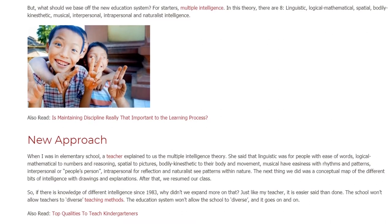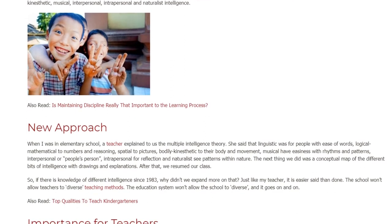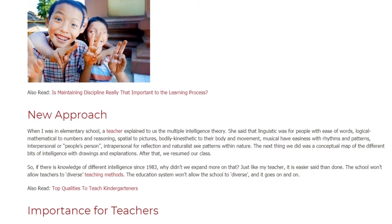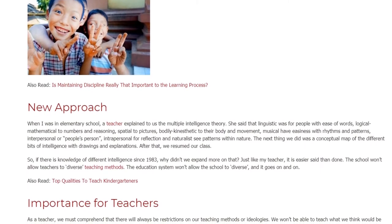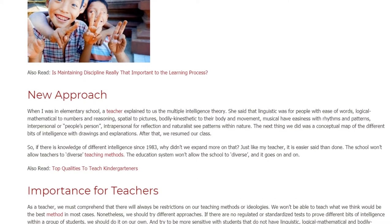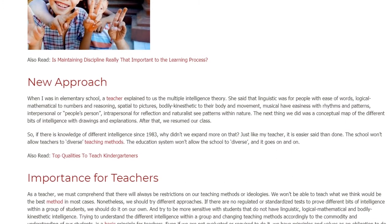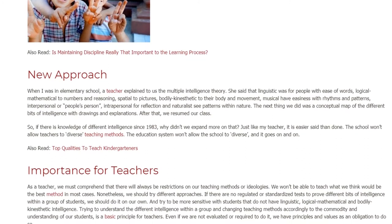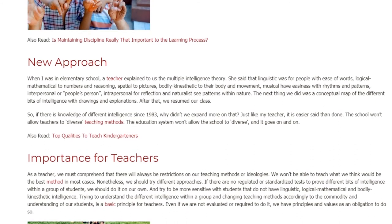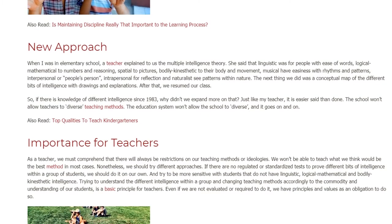When I was in elementary school, a teacher explained to us the Multiple Intelligence Theory. She said that Linguistic was for people with ease of words; Logical-Mathematical for numbers and reasoning; Spatial for pictures; Bodily-Kinesthetic for their body and movement; Musical for easiness with rhythms and patterns; Interpersonal for being a people person; Intrapersonal for reflection; and Naturalist for seeing patterns within nature. The next thing we did was a conceptual map of the different types of intelligence with drawings and explanations. After that, we resumed our class.